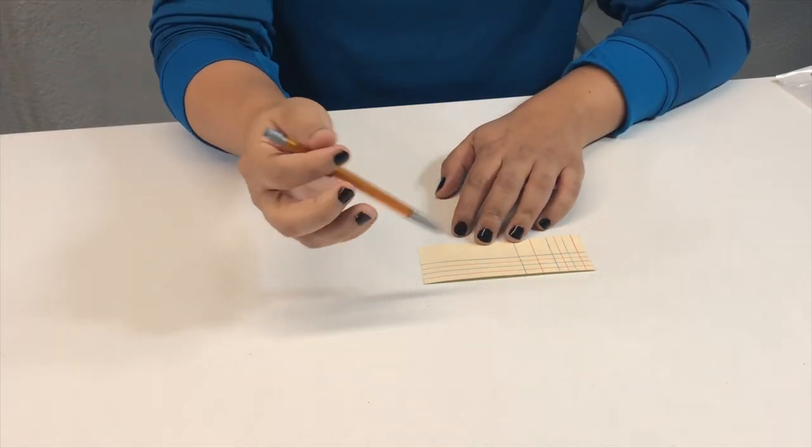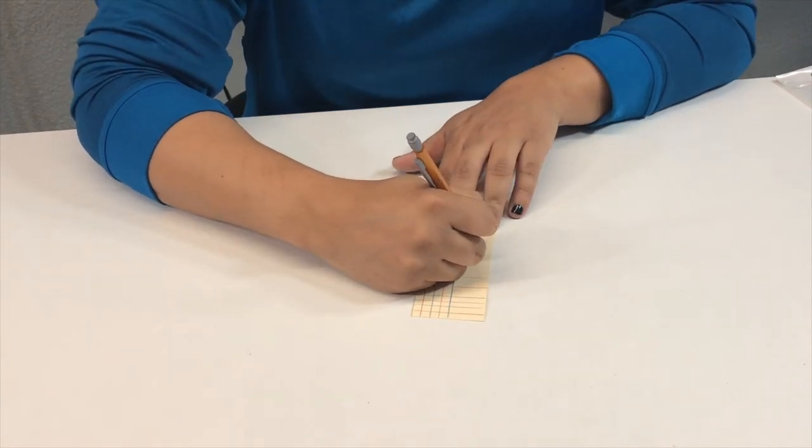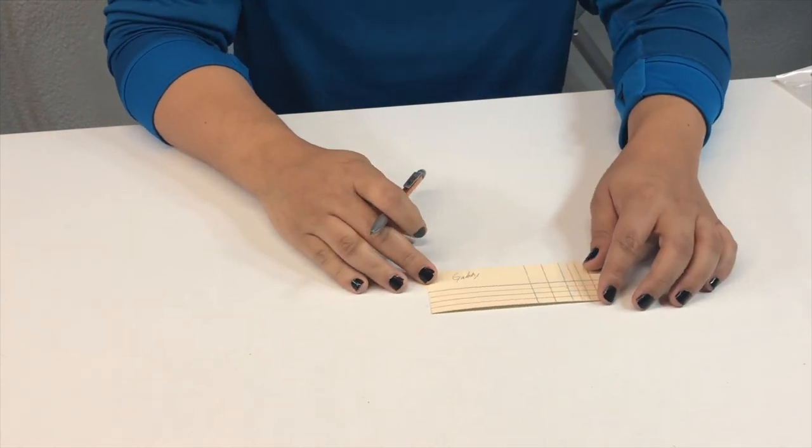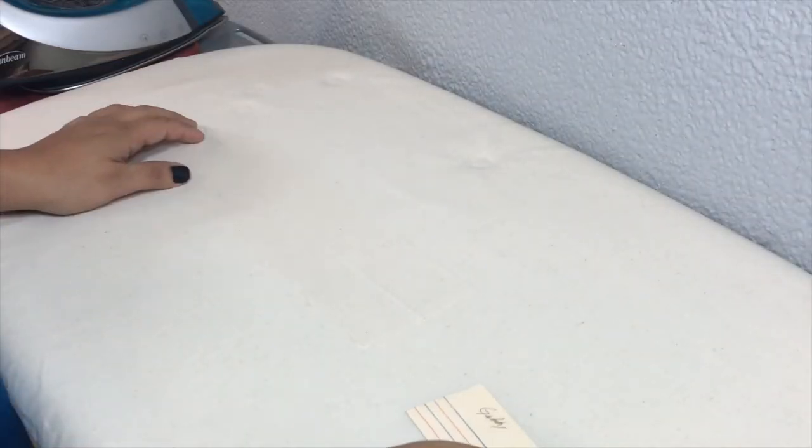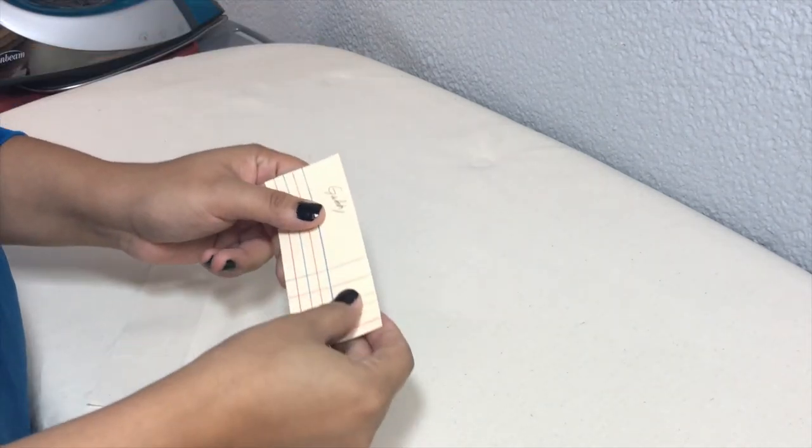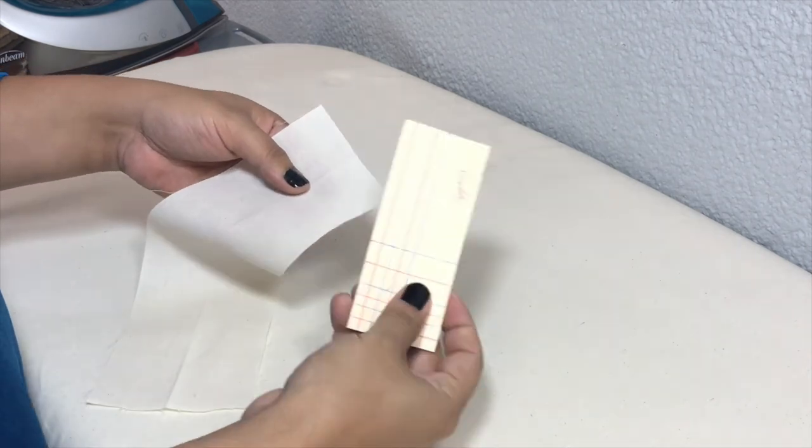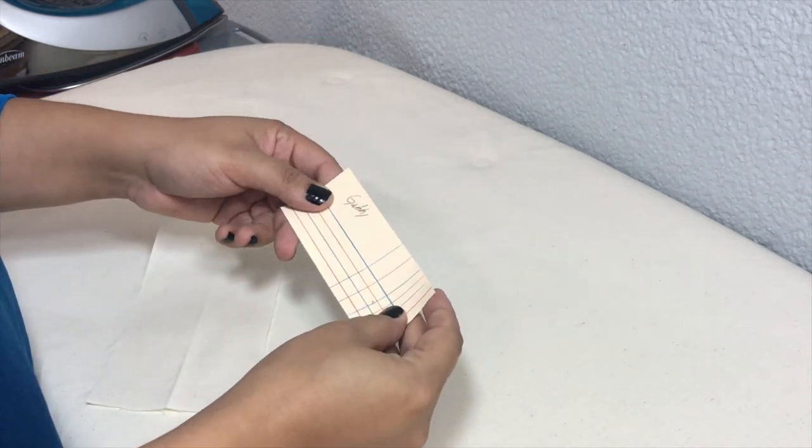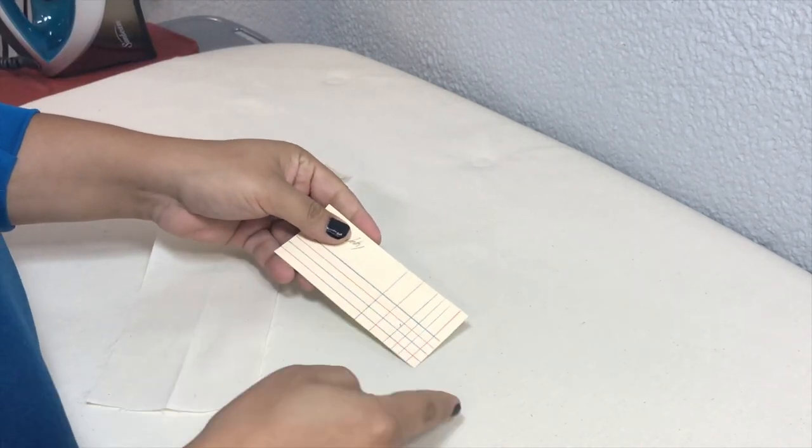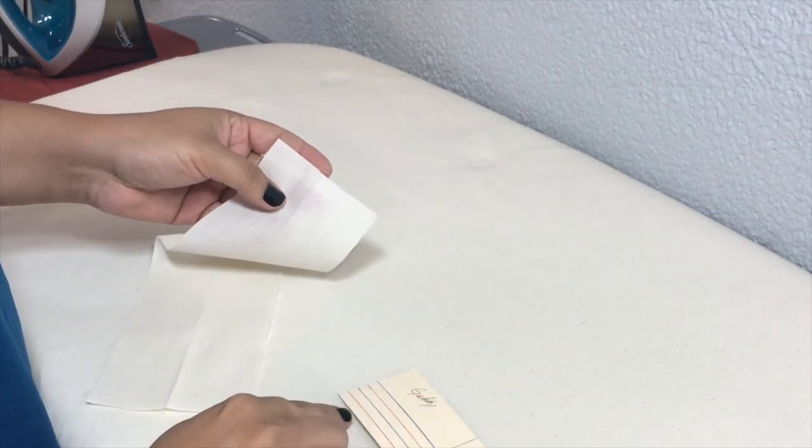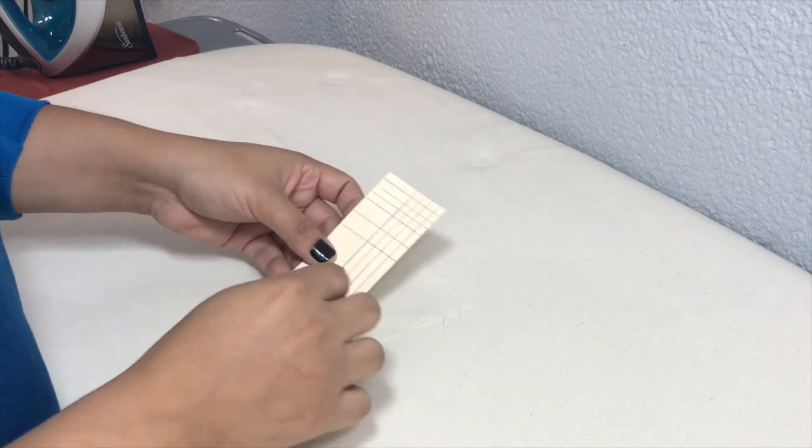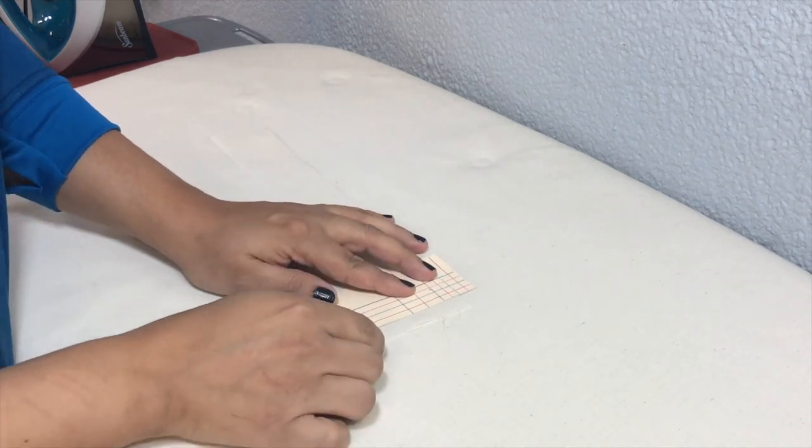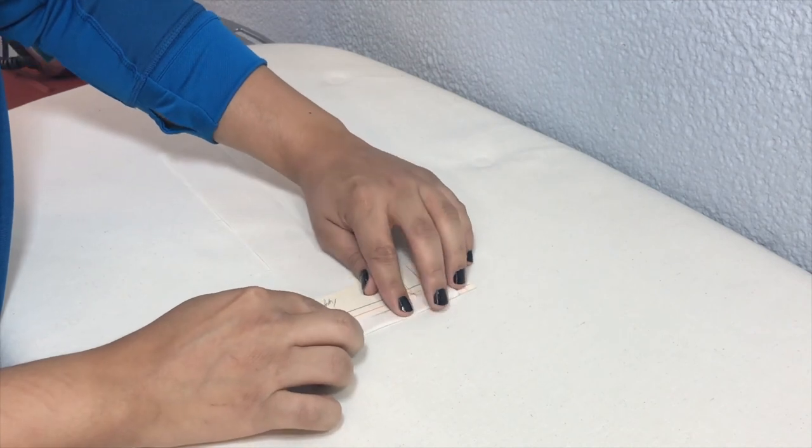I'm going to demonstrate how to use this. Depending on the area you want to press, you have both sides to work with. Let's say I need to make a half-inch fold. I just put the ruler here and fold the fabric until I reach the half-inch mark.